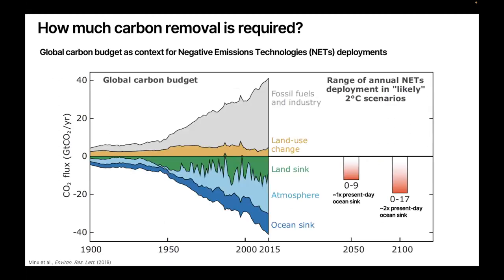The reason CDR is required is because the rate at which we can conceivably reduce emissions is just impractically fast. The amount of CDR required is very large. This figure from a 2018 paper shows the global carbon budget as a function of time, with land, atmosphere, water, and ocean sinks for anthropogenic CO2. By 2050, the expectation is a requirement of order 10 gigatons of removal — commensurate with the current magnitude of the global ocean sink. By the end of the century, that number is expected to be closer to 20 gigatons, roughly double the current ocean sink.